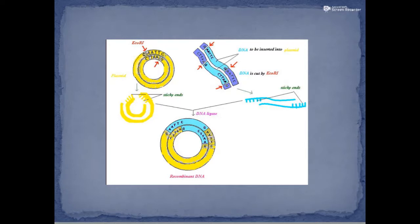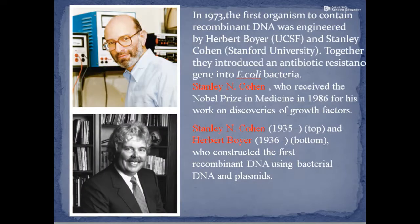Paul Berg was the first to form recombinant DNA. In 1973, the first organism to contain recombinant DNA was engineered by Herbert Boyer and Stanley Cohen. They introduced an antibiotic resistance gene into E. coli bacteria. Stanley Cohen received the Nobel Prize in Medicine in 1986 for his work on discoveries of growth factors.